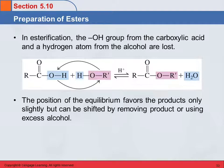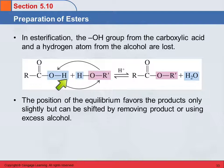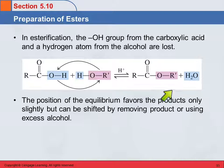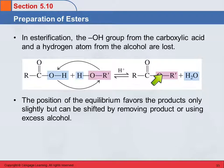You can shift the equilibrium one way or another by changing the reaction conditions. One way, if you're trying to produce esters, is by removing the product as you form it. In general chemistry, we learned about Le Chatelier's principle — if you cause a change to an equilibrium, it will shift to reduce that change. So if we take away the ester as it's being formed, the forward reaction will be faster than the reverse reaction, and the equilibrium will shift to the right to make more product.